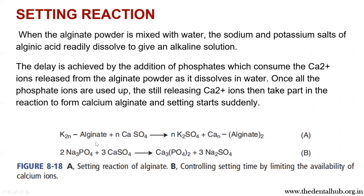The potassium alginate present in the alginate powder, on dispersion with water and reaction with calcium sulfate, forms potassium sulfate and calcium alginate, which is the main product. When alginate powder is mixed with water, the sodium and potassium salts of alginic acid readily dissolve to give an alkaline solution. We need to achieve a delay to allow good working time. This delay is achieved by addition of phosphates, which consume the calcium released from alginate as it dissolves in water. Once all the phosphate is taken up, the remaining calcium ions then take part in the reaction to form calcium alginate, and setting starts suddenly.